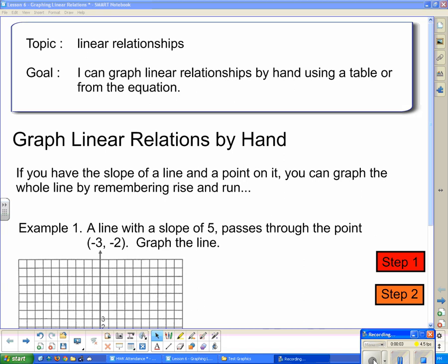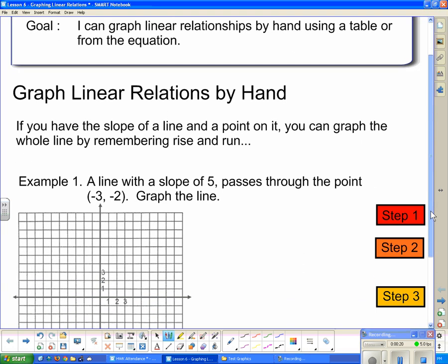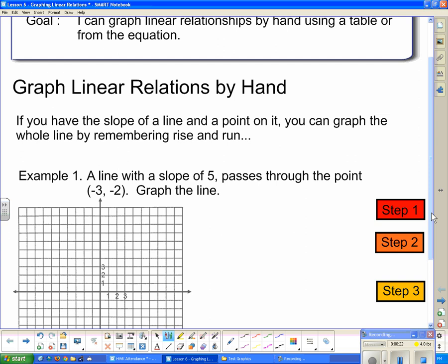Welcome back to PEAS. Today we're going to be working on linear relationships and our goal today, hopefully by the end of this, you can say I can graph linear relationships by hand using a table or from the equation. So taking a look at graphing linear relationships by hand, if you have the slope of a line and a point on it, you can graph the whole line by remembering rise and run. And of course, rise and run is all about the slope.